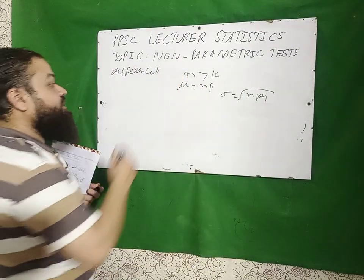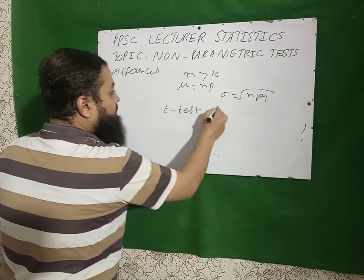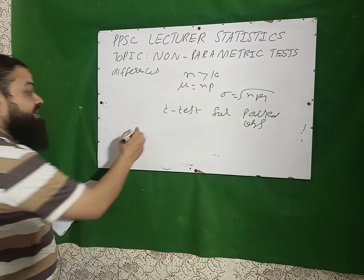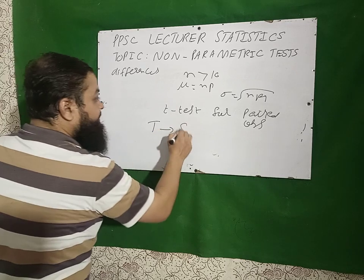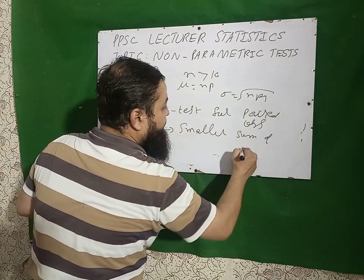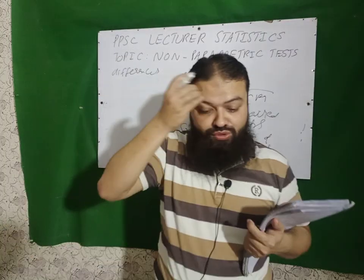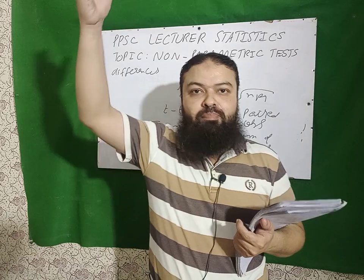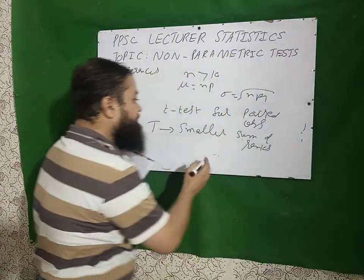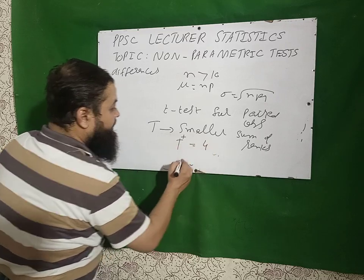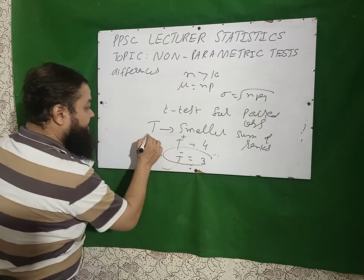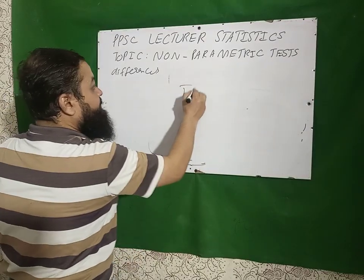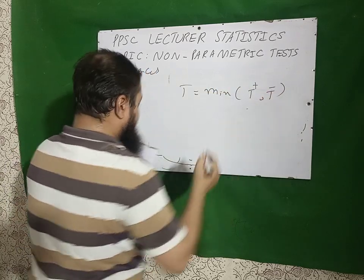The Wilcoxon Signed Rank Test is an alternative to the t-test for paired observations — a very important question. Its test statistic is T, which is the smaller sum of ranks — a very important question. There are plus ranks and minus ranks; if the sum of plus ranks (T⁺) = 4 and sum of minus ranks (T⁻) = 3, then T = minimum(T⁺, T⁻) = 3. So T = min(T⁺, T⁻) — a very important question.